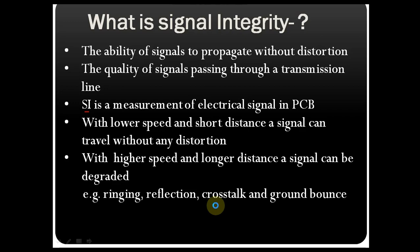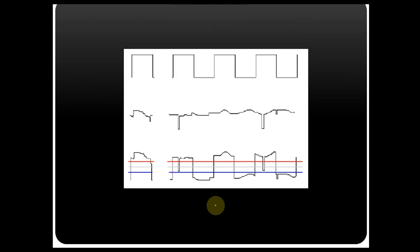Degradation can also cause ground bounce. Let us take an example to understand signal integrity. Say you have this signal — this is a very clean signal, and this signal is called A.